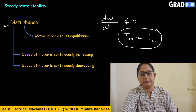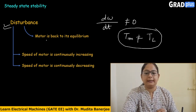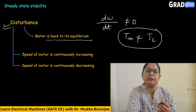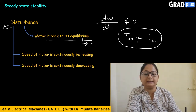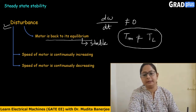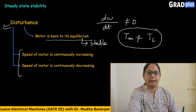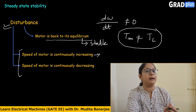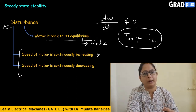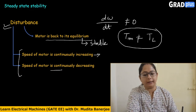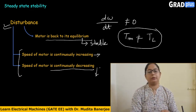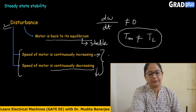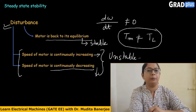If there is some disturbance and the motor comes back to its equilibrium point, that is called stable operation. When the motor speed is continuously increasing and not returning to its equilibrium point, or the motor speed is continuously decreasing and operation is not restoring to the stable point, that is called unstable operation.